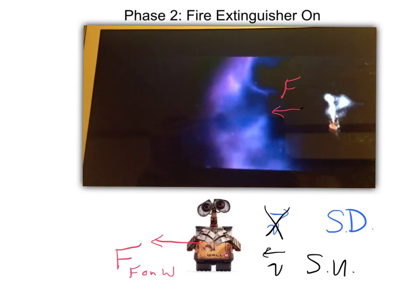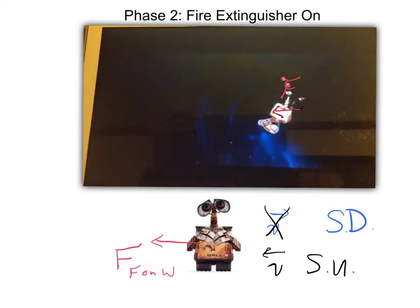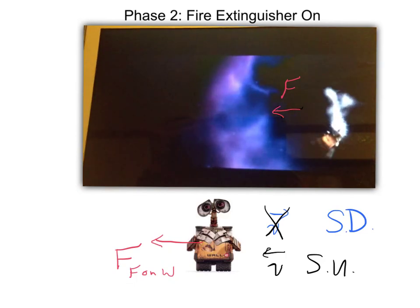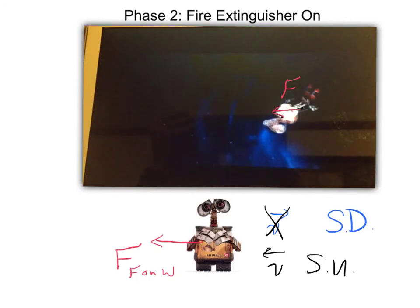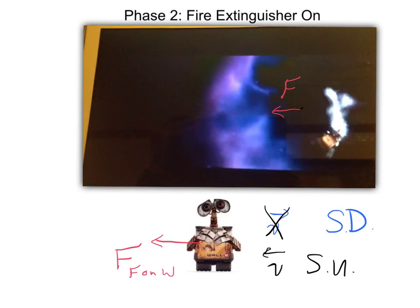Sure enough, he points his fire extinguisher to the left, causing a force to the right on him, and for one brief instant he slows down and then speeds up in the opposite direction. Pixar analyzed this correctly and Newton's laws of motion came through in WALL-E. This is what I'm hoping you can do with your own favorite scene — tell me about the forces, the motion, friction. Does it work? Was physics used properly? That's your task and I'm excited to see what you come up with.